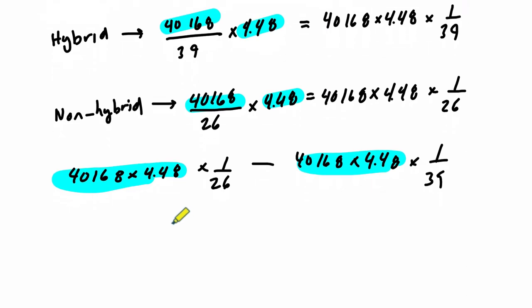Whatever that number is, even if you don't know it, it's the same number, right? Same two factors multiplied. So we can essentially factor it out. It's going to be 40,168 times 4.48. And then what's left are these factors here and the difference of them. Times 1 over 26 minus 1 over 39. I'm just factoring out a common factor.